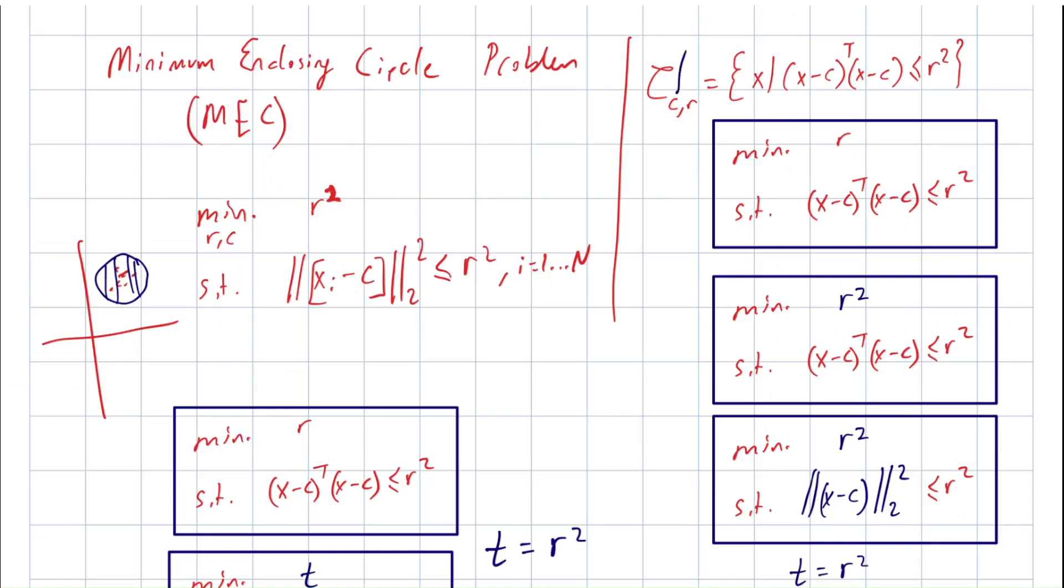We need to find two parameters c and r. c is an n-dimensional vector and r is a scalar, positive of course. We can express the problem given by this expression. Since we know that r is going to be positive, we can transform that problem to this expression, and those two problems are equivalent. The answer (r, c) to this problem is equal to the answer (r, c).